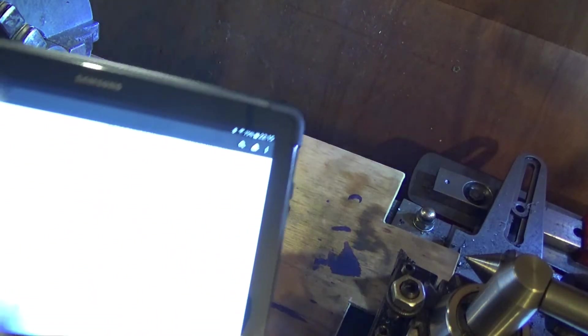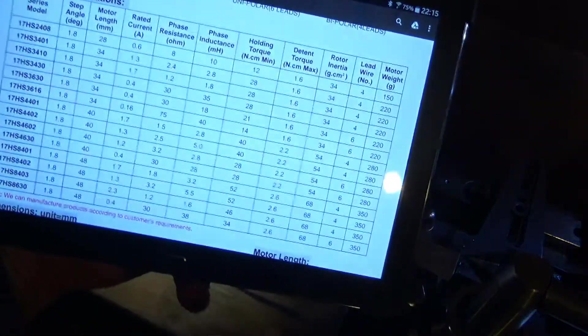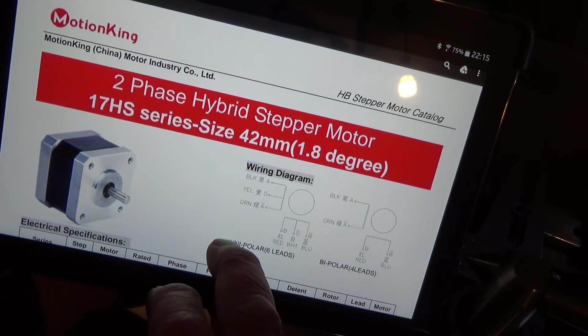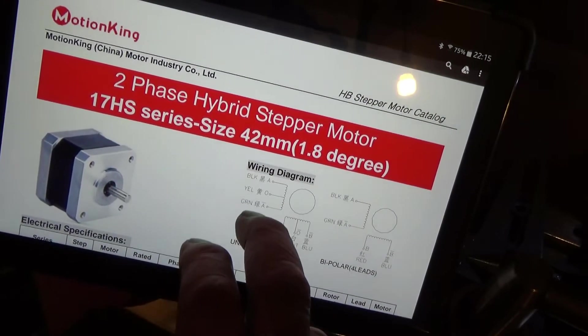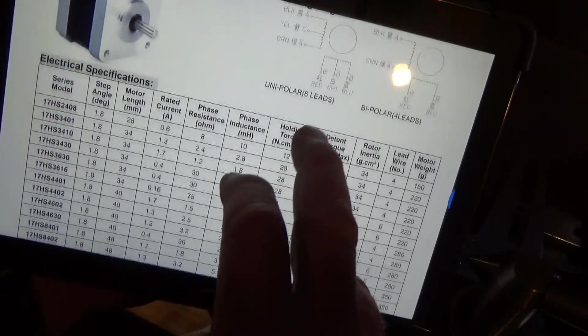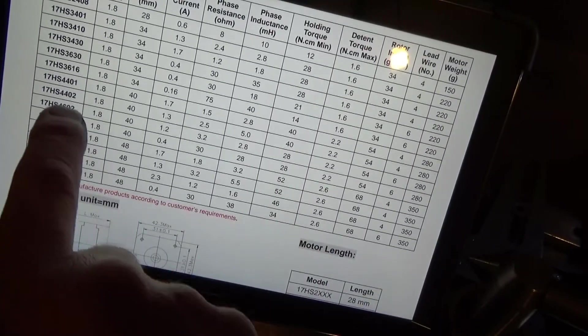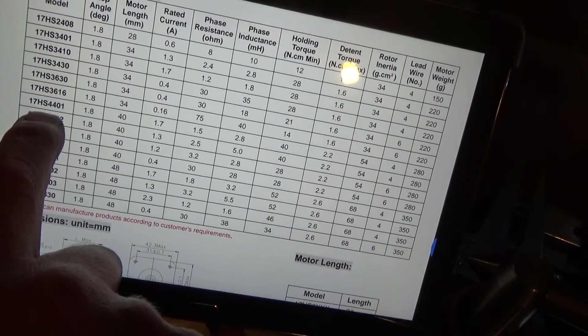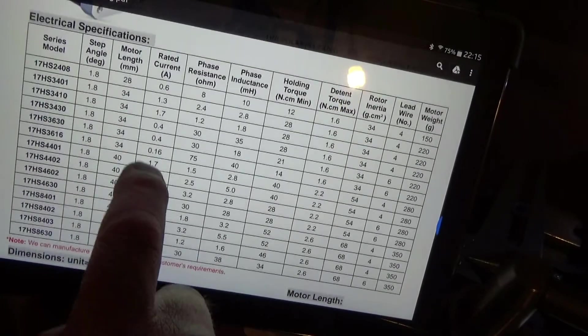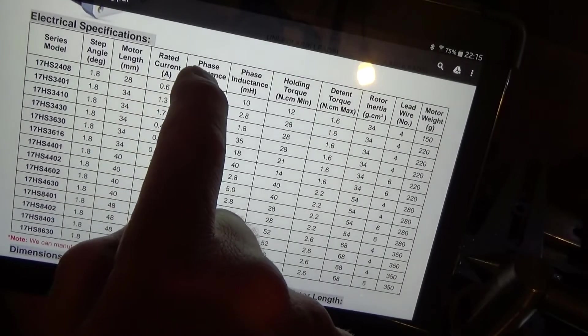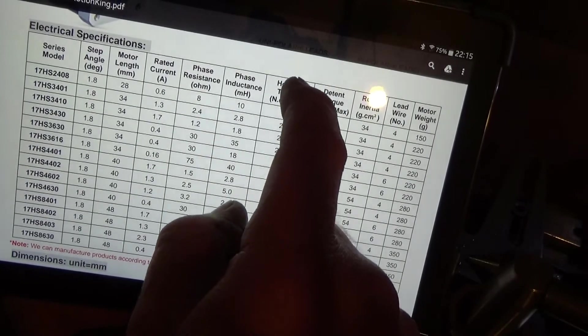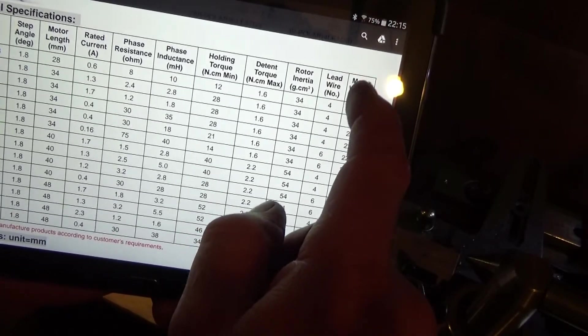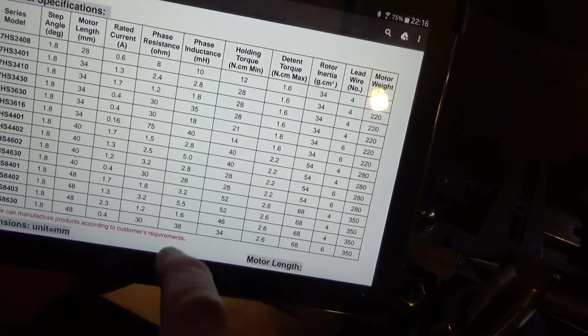I went on to a website which listed this motor and here it is. Two phase hybrid stepper motor, 17HS series, 42 millimeter, 1.8 degrees. My motor is the 4401. Here's all the specifications for it: step angle, motor length, rated current, phase resistance, phase inductance, holding torque, detent torque, rotor inertia, lead wire, motor weight.